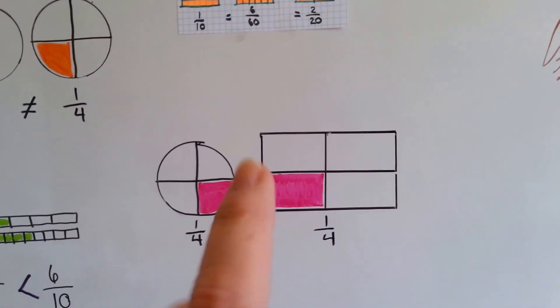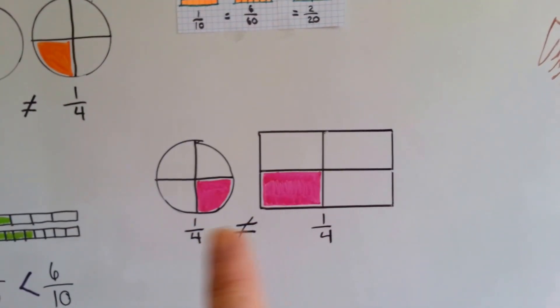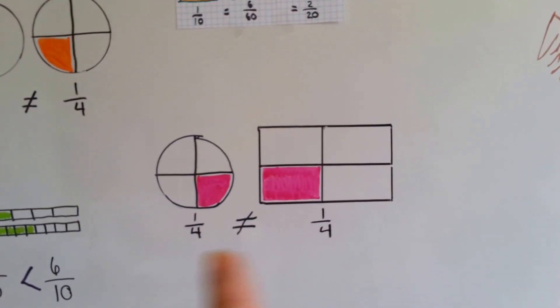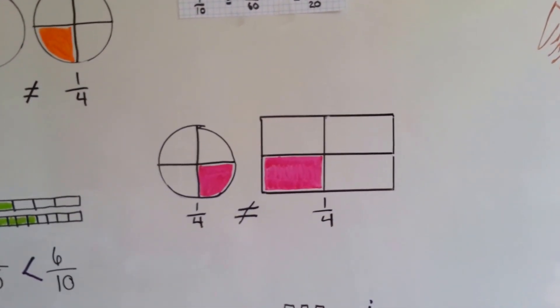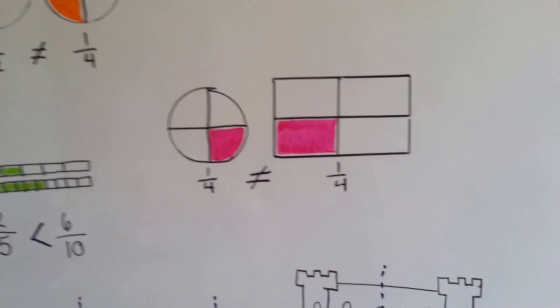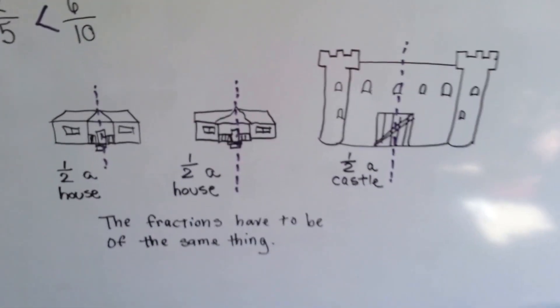Now, going back to the idea of just because it's not the same thing, because they're both one fourth, they're not equal. This one's much smaller than this one. I want you to look at it this way.